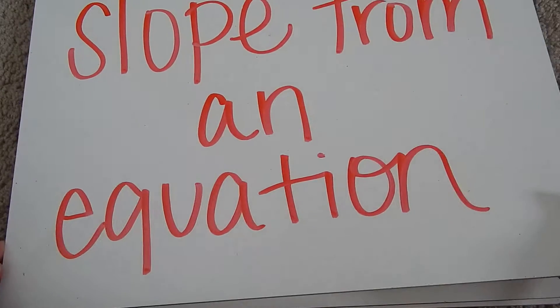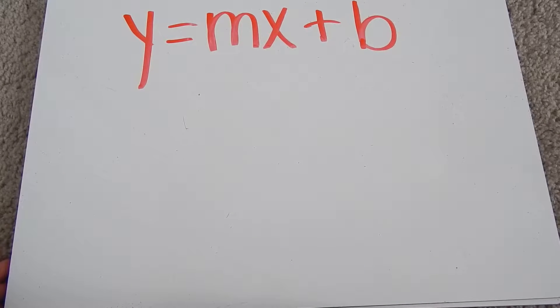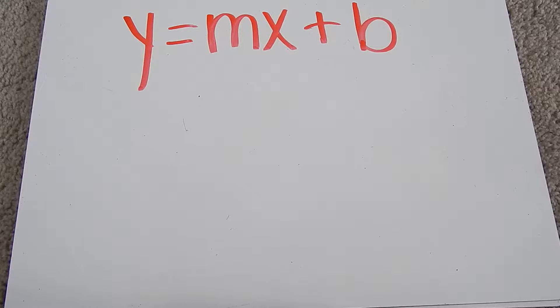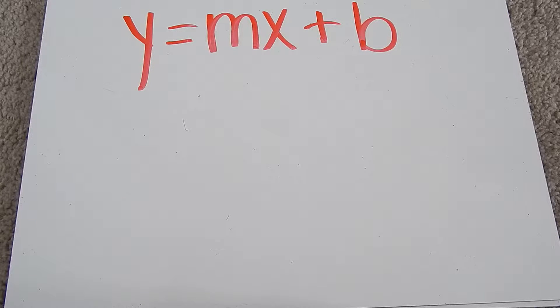To find slope from an equation, there's one thing we have to talk about: that is y equals mx plus b. This is the slope-intercept form of a linear function.